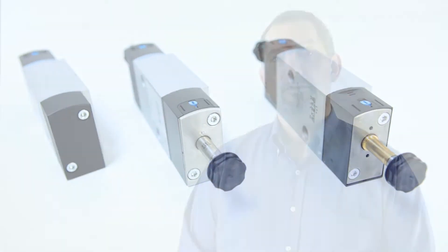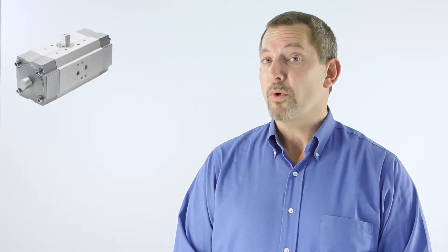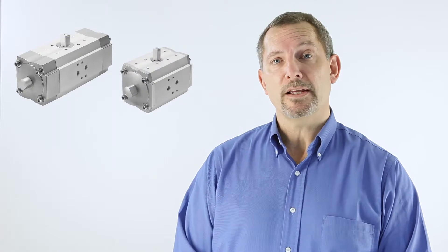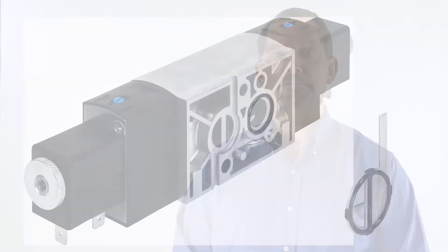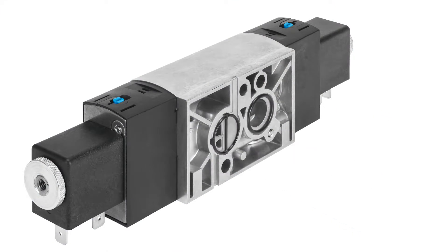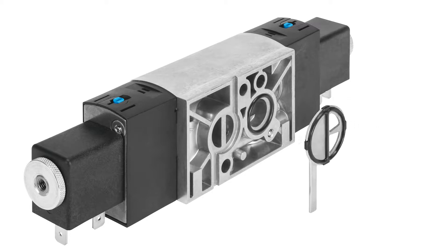Like every other solenoid valve, the VSNC consists of a basic valve and coil. But whether you are using a single or double acting actuator, we can offer you a solution with just one valve. By simply rotating the seal on the Nemours interface, you can switch quickly between 3.2 and 5.2 valve functions as and when you need.